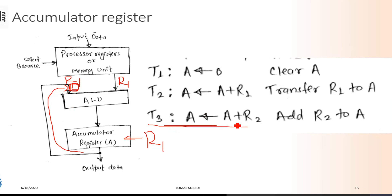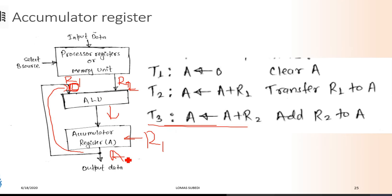In the second instance, A equals A plus R2. The R2 connection feeds over the figure, giving R1 plus R2. This is the addition in the accumulator — you operate with this example.